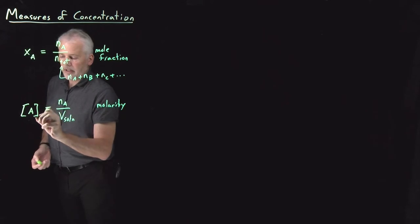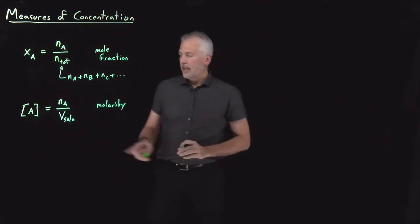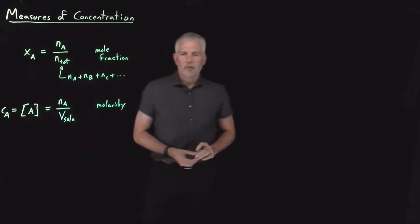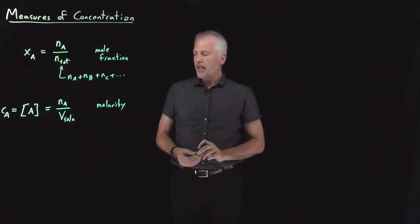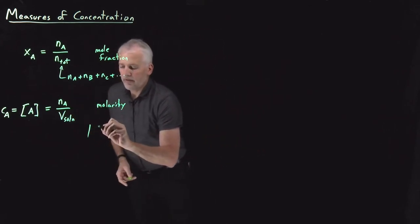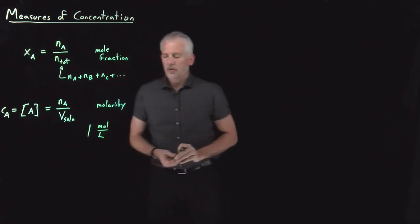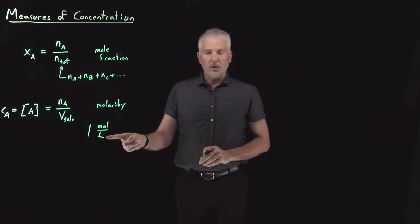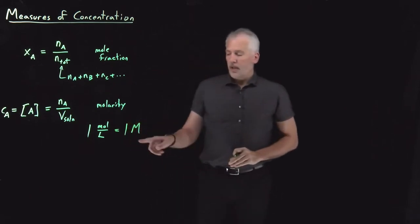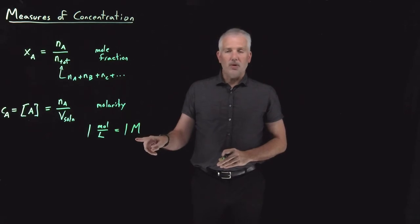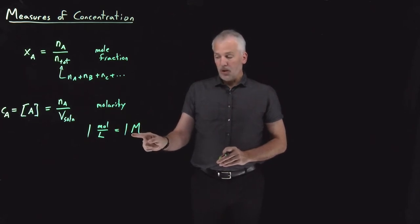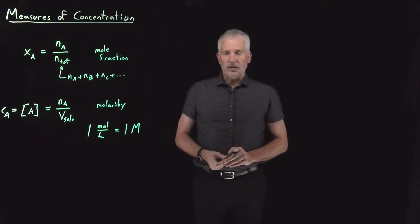We use the notation [A] in square brackets to denote molarity, though that can sometimes be confusing. You might also see concentration written as C sub A for the concentration of A, which usually denotes molarity. The units are moles divided by volume — typically moles over liters, which we denote as molar. So one mole per liter is a one molar solution, two moles per liter is a two molar solution. We use capital M for that unit.